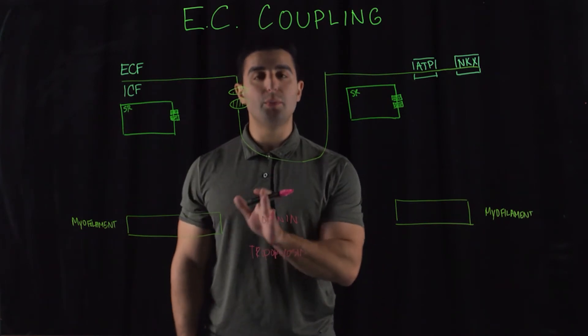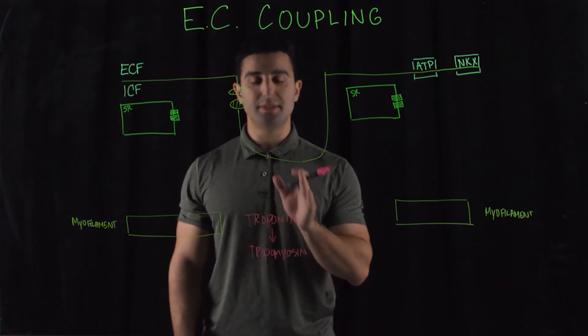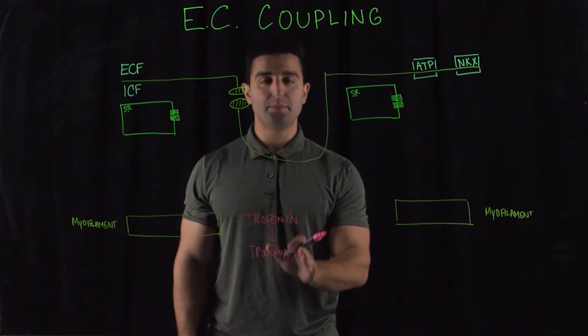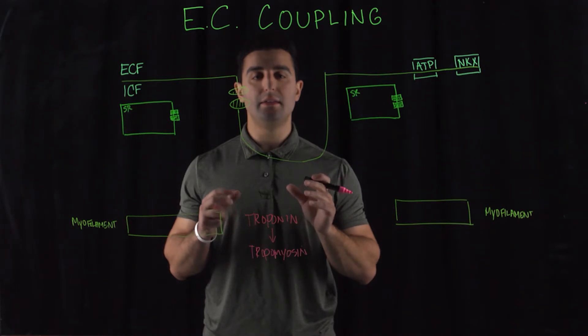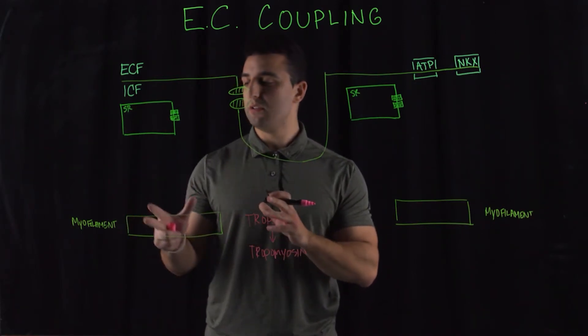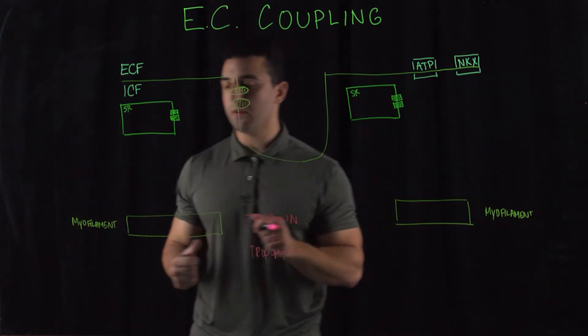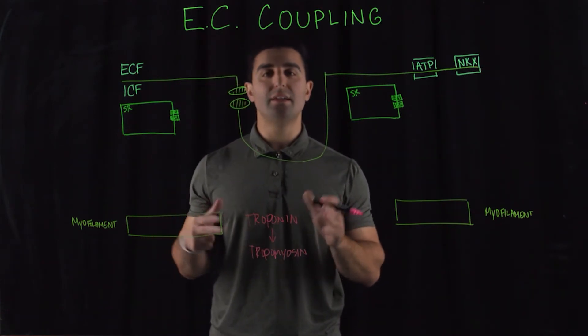Tropomyosin is blocking the myosin head from binding to the actin filament. However, whenever the troponin complex becomes active, tropomyosin lifts the actin head, and the myosin head binds to the myofilament. So that's the main cascade for skeletal muscle.